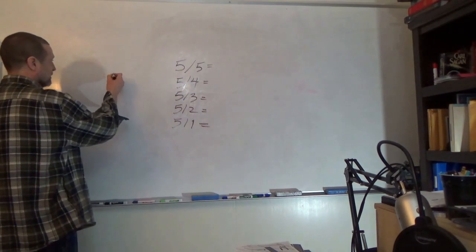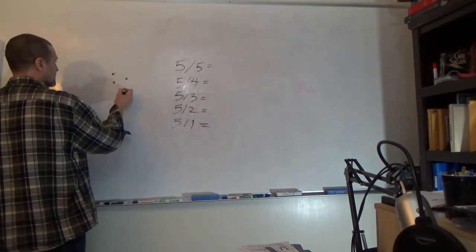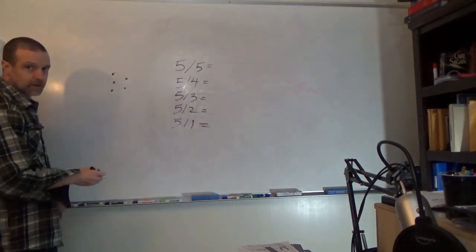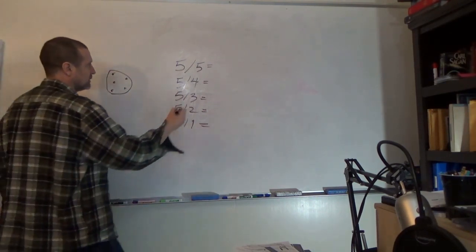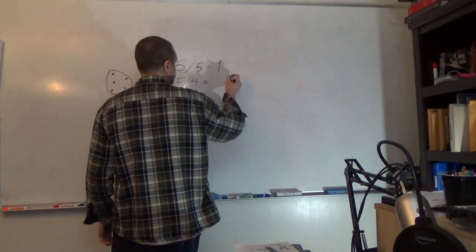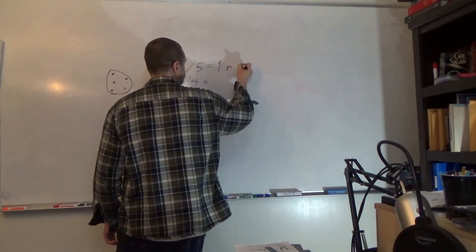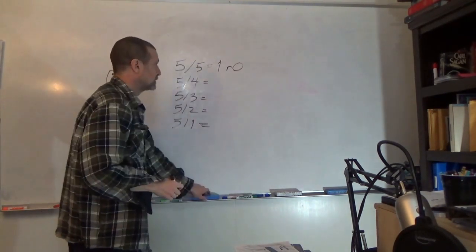5 divided by 5: 1, 2, 3, 4, 5. If I divide it, I get one group of 5 with 0 remainder.